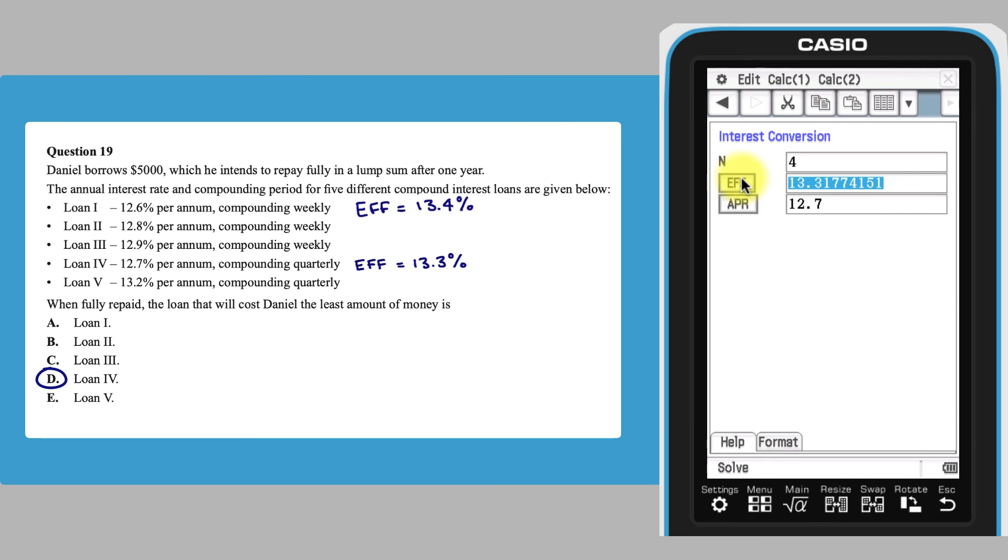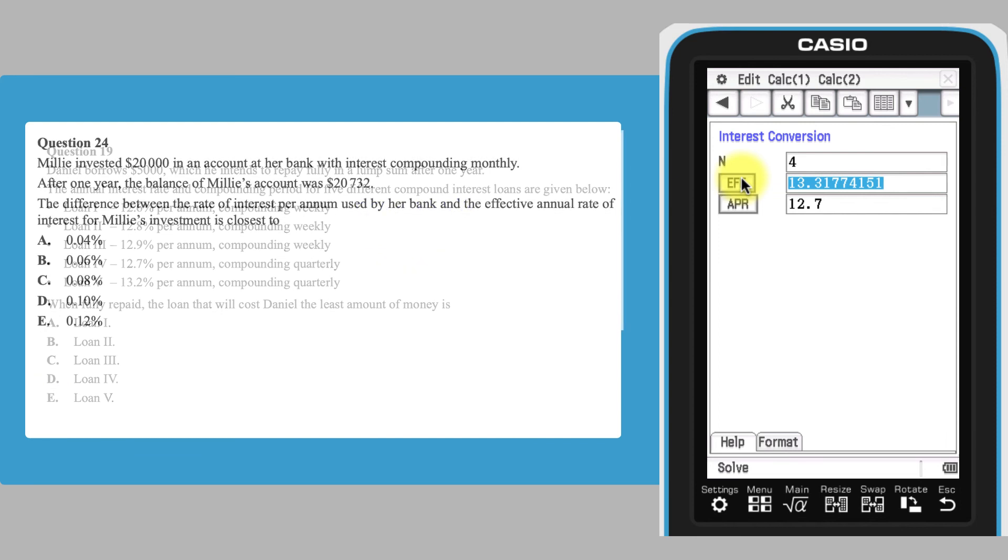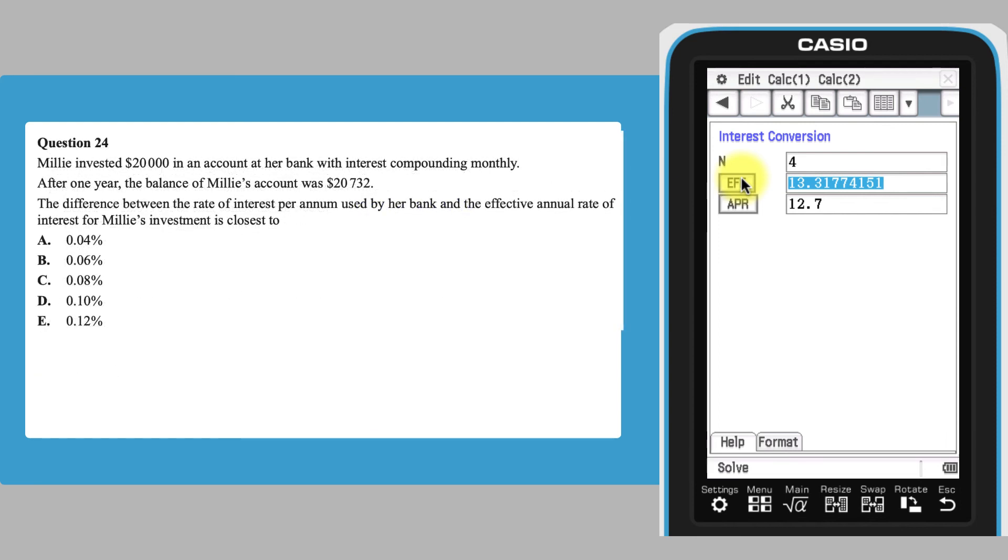Use the interest conversion tool in ClassPad's financial app to answer this question. You can find the effective interest rate by dividing the value at the end of the year by the value at the start of the year. Then use the interest conversion tool to find the nominal rate of the loan compounded monthly. The correct answer is B.